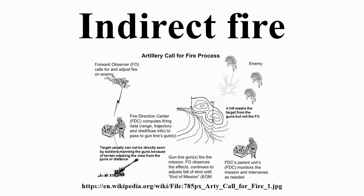Indirect fire can be used when the target is visible from the firing position. However, it is mostly used when the target is at longer range and invisible to the firer due to the terrain. Longer range uses a higher trajectory, and in theory maximum range is achieved with an elevation angle of 45 degrees.